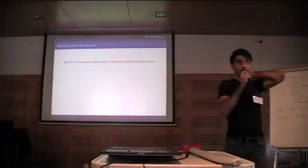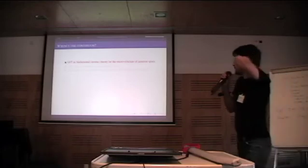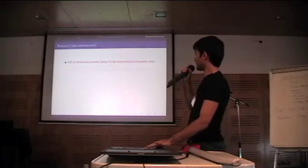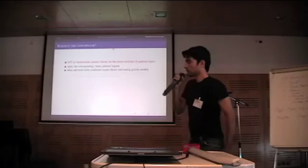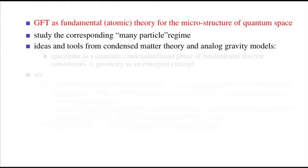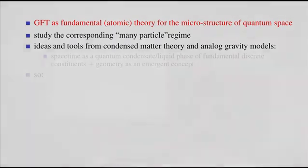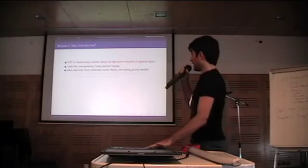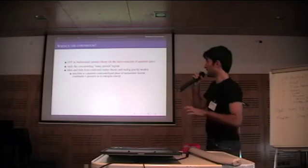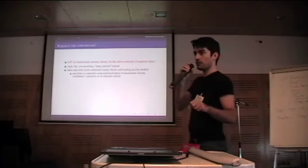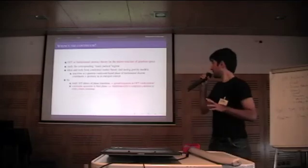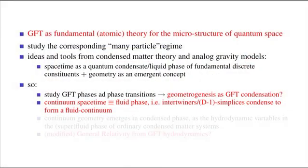Well, here is the last speculative part. If we take group field theory seriously as the fundamental description of the microstructure of quantum space, we need to study the corresponding many particle regimes, so the states and configurations for many GFT quanta. But now we can use ideas from condensed matter theories and analog gravity models, and apply them—in particular the idea of spacetime as a sort of a condensate or a fluid of discrete microscopic constituents.